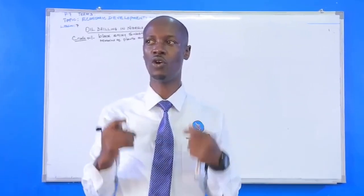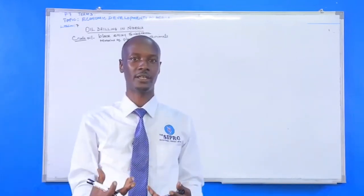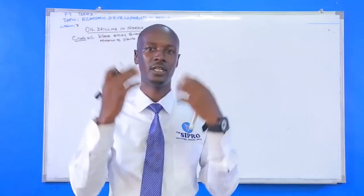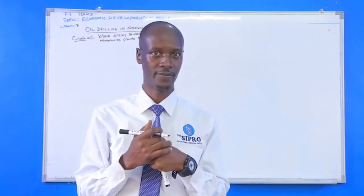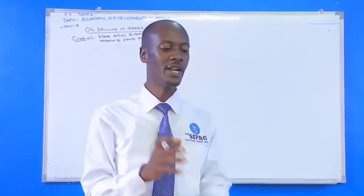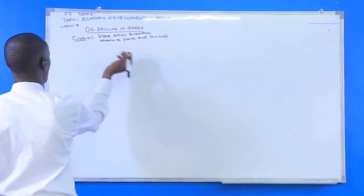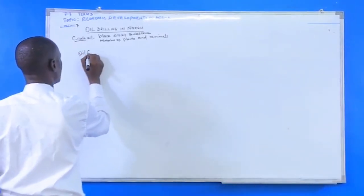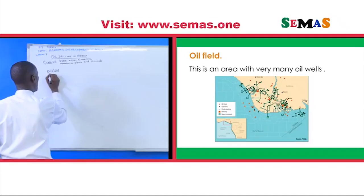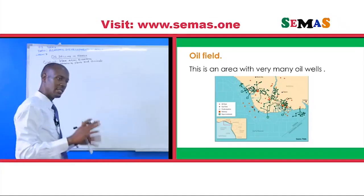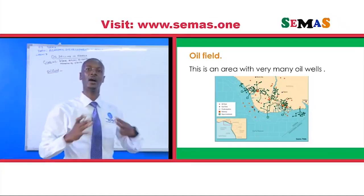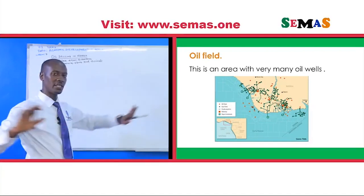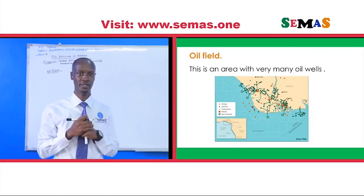It is this crude oil that is extracted from the ground and drilled. Now, oil drilling is carried out in an area known as an oil field. An oil field is a large area of land where we find crude oil.